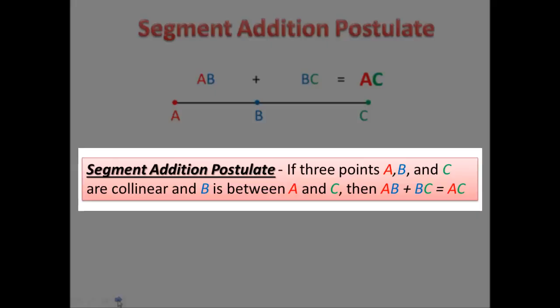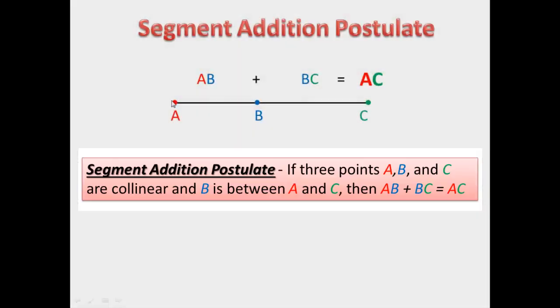Now the proper definition: if three points A, B, and C are collinear, which means all three points are on the same line, and B is between A and C, then AB plus BC equals AC.